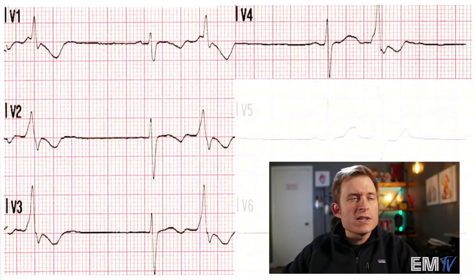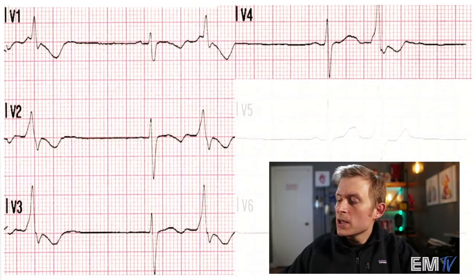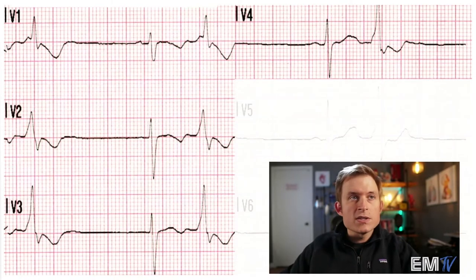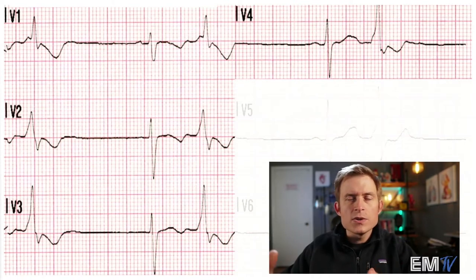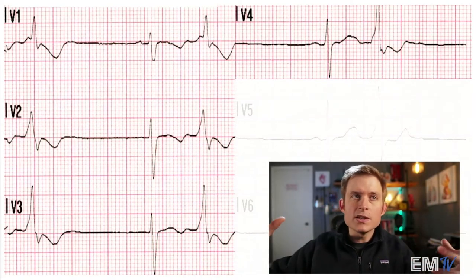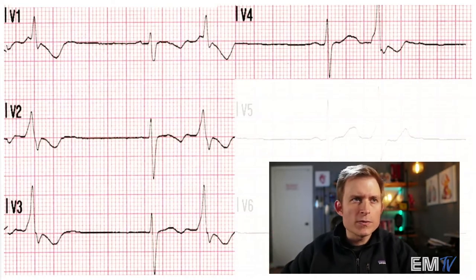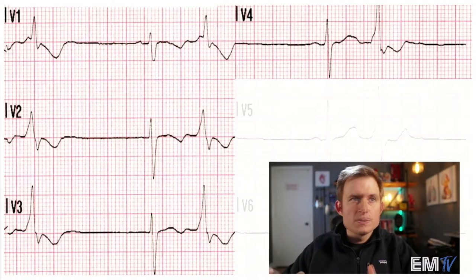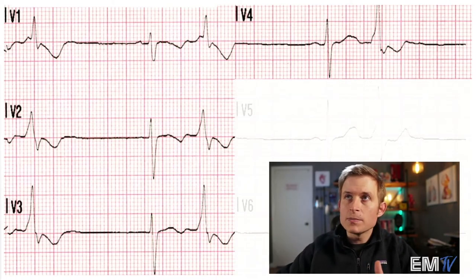Quickly looking at this, I'm not seeing any ST segment elevation in our actual sinus beats. When you're interpreting a 12-lead, you're looking for ST segment elevation in your normal beats, not your ectopic ones. You don't need to interpret the PVCs on a contiguous lead grouping interpretation — they're not going to be diagnostic for STEMI. What you're looking for are your sinus beats, and you base your interpretation on those.